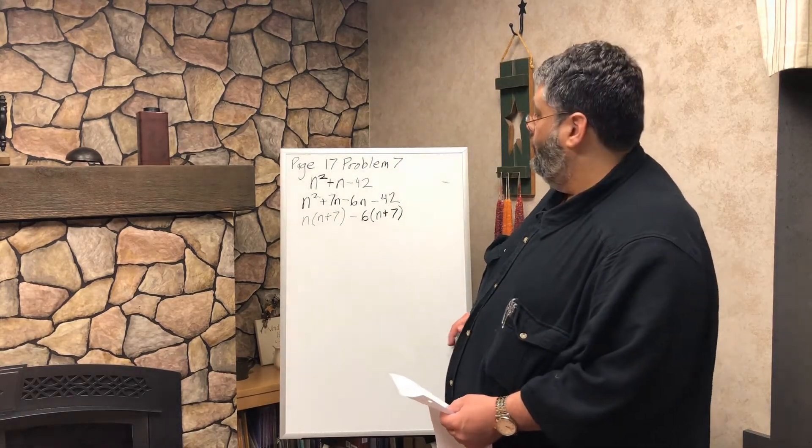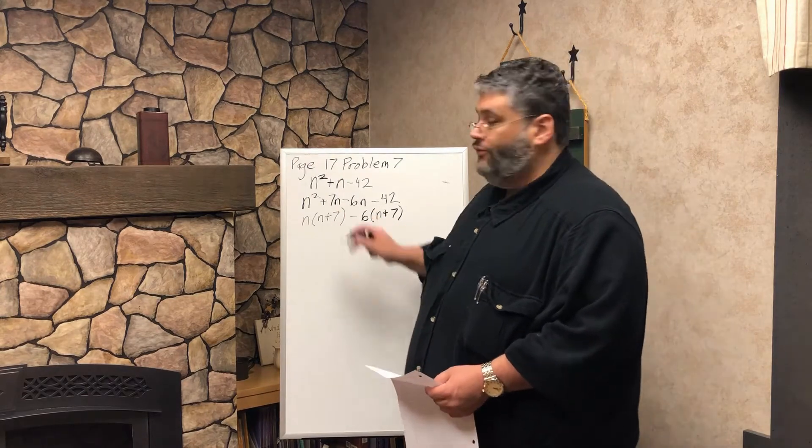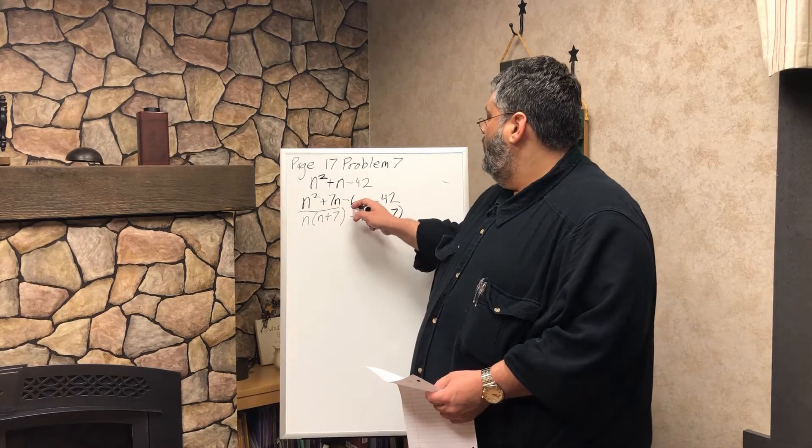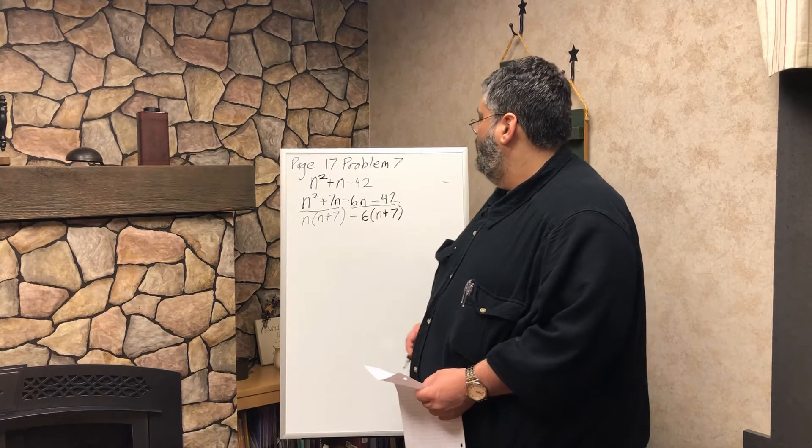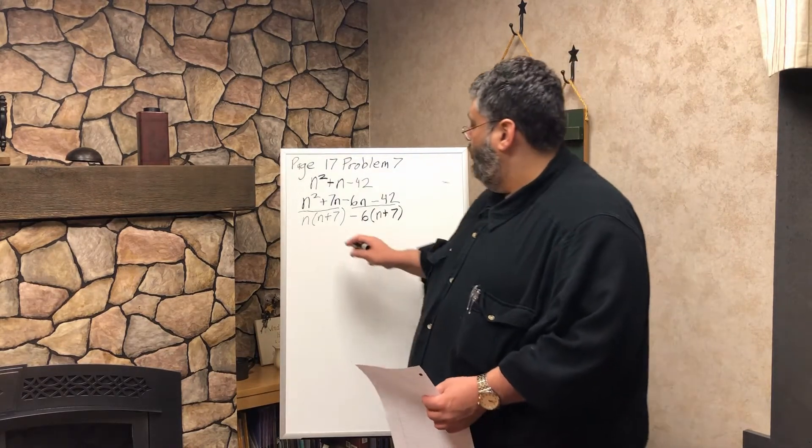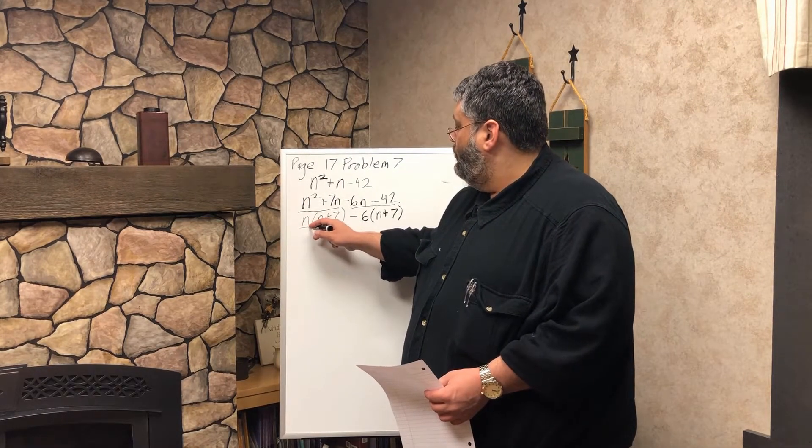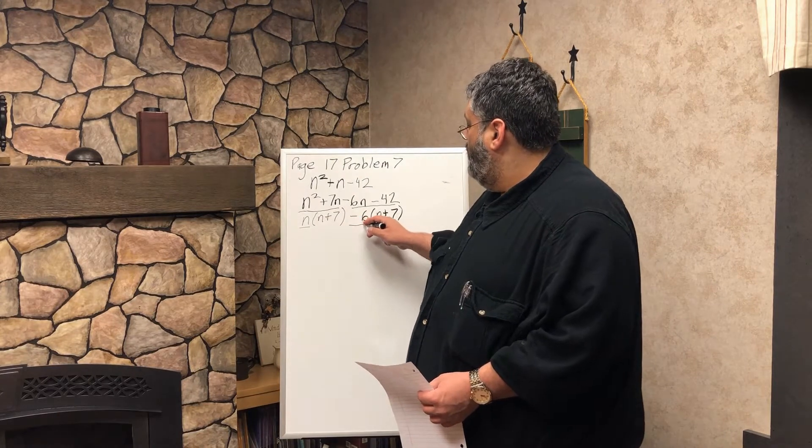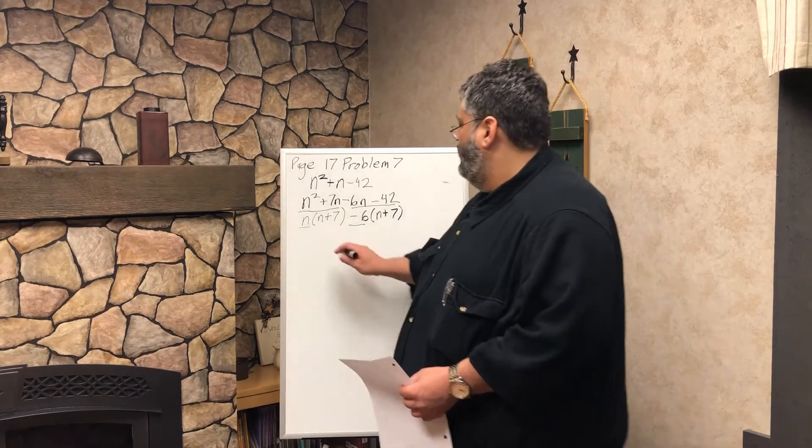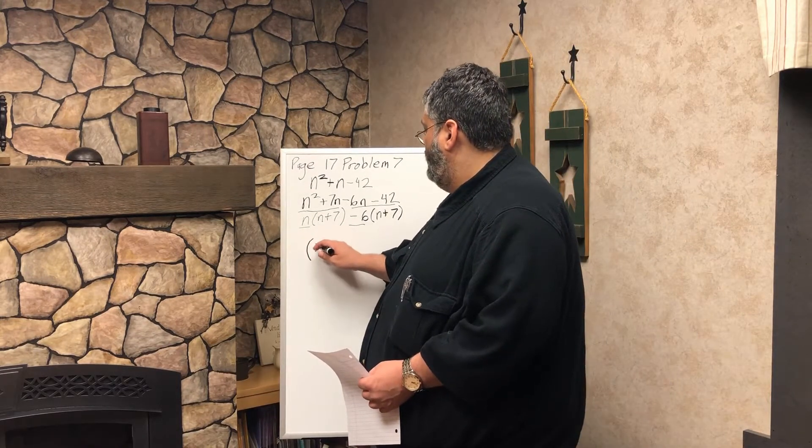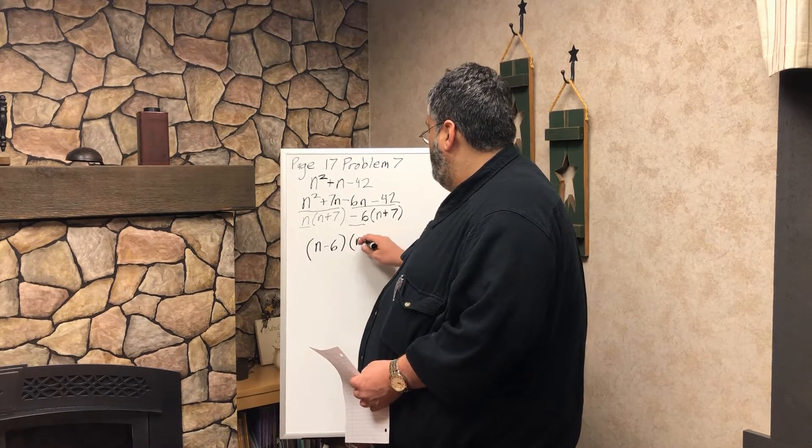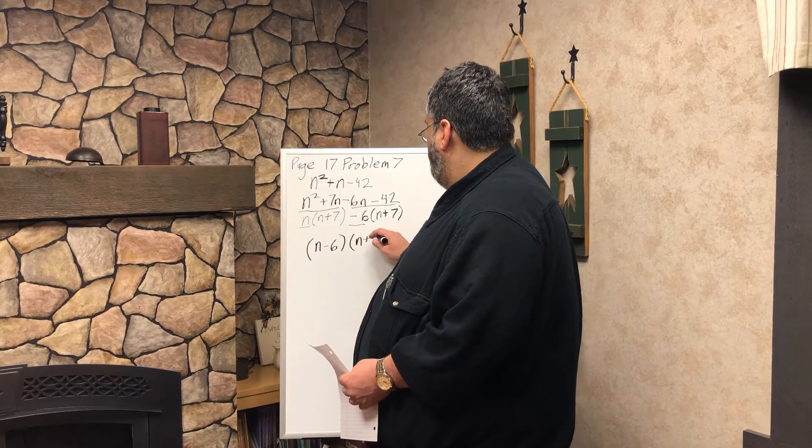So what we did here is we factored out an n plus 7 from over here and over here. Now what we're going to do here is we're going to combine this and this beginning part.